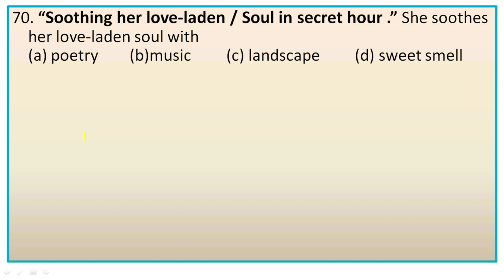Question 70: 'Soothing her love-laden soul in secret hour.' She soothes her love-laden soul with — options: poetry, music, landscape, sweet smell. These lines are from stanza 9: 'Soothing her love-laden soul in secret hour with music sweet as love which overflows her bower.' So she soothes her love-laden soul with music. It is about the Highborn Maiden kept in a palace tower, who soothes her lovesick state with music, because music is as sweet as love. Right option is B, music.